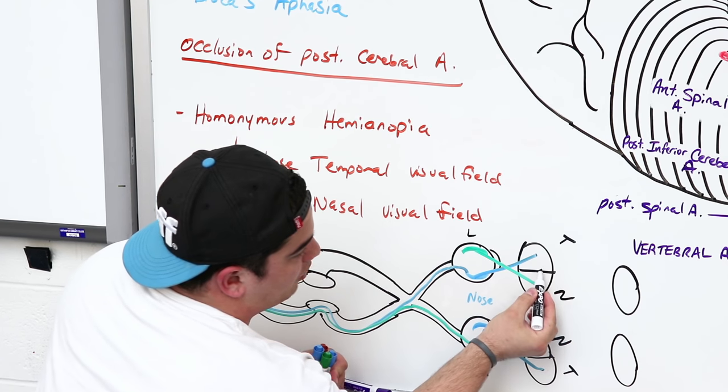If the vagus nerve is damaged in a PICA occlusion, one of the classical signs is dysphagia — trouble swallowing — and possibly a negative gag reflex. The uvula might also be deviated. So 10th cranial nerve palsy can result in dysphagia and a negative gag reflex. Another important sign is that sympathetic fibers descend through this region; if damaged, they can no longer properly reach the eye, producing what's called Horner's syndrome.